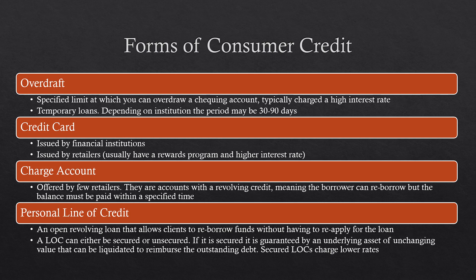A personal line of credit is an open revolving loan that allows clients to reborrow funds without reapplying. A line of credit can be secured or unsecured — if secured it is guaranteed by an underlying asset, usually a house, turning it into a home equity line of credit. You can borrow and repay flexibly, though the rate is floating and fairly high, not quite as high as a credit card or overdraft.